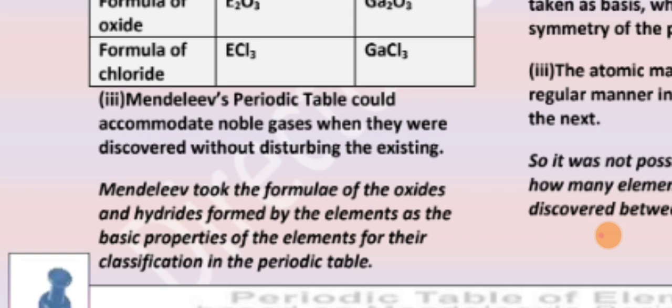Mendeleev took the formula of the oxides and hydrides formed by the elements as the basic property of the elements for their classification in the periodic table. Mendeleev said that the oxide and hydride was the main criteria to identify and classify elements.